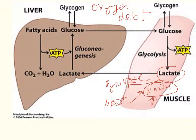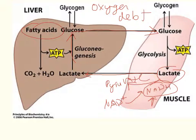So what your muscles will do is they will export that lactate to the liver. The liver will use energy that it gets from the breakdown of fatty acids to create glucose out of lactate, and then it sends the glucose back to the muscles.